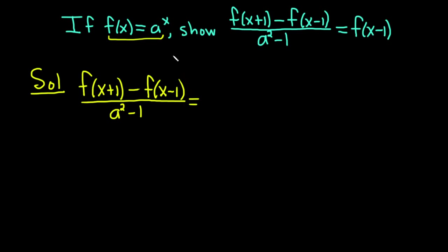This is equal to, so we know that f of x is equal to a to the x. So f of x plus 1 is telling us that we need to evaluate our function f at x plus 1. Instead of a to the x, it'll be a to the x plus 1. We have our minus sign. And f of x minus 1, instead of a to the x, will be a to the x minus 1.